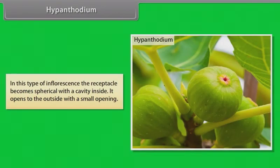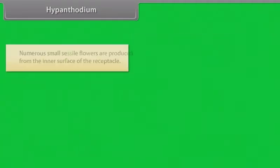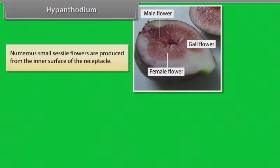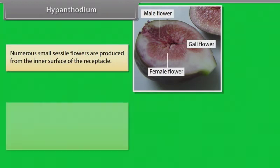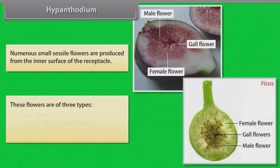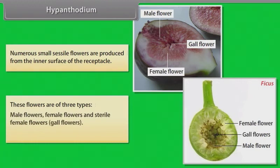In hypanthodium, the receptacle becomes spherical with a cavity inside, opening to the outside with a small opening. Numerous small sessile flowers are produced from the inner surface of the receptacle. These flowers are of three types: male flowers, female flowers, and sterile female flowers (gall flowers). Example: Ficus.